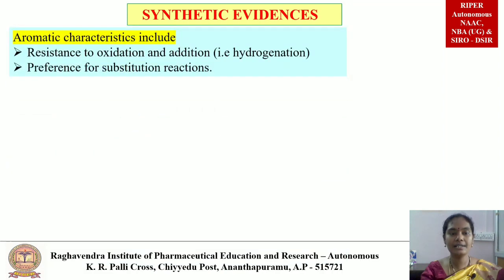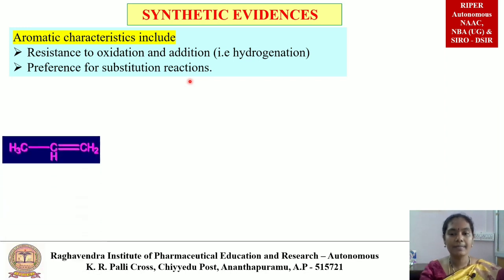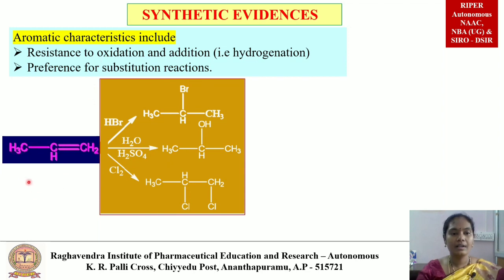Coming to synthetic evidences, aromatic characteristics include resistance to oxidation and addition (hydrogenation), and aromatic compounds mainly undergo substitution reactions. For example, propene — a straight chain alkene — undergoes addition reaction with HBr: hydrogen attaches to the first carbon and bromine to the second, forming isopropyl bromide. Propene also reacts with water in the presence of H2SO4 to give isopropyl alcohol, and with chlorine to give 1,2-dichloropropane.